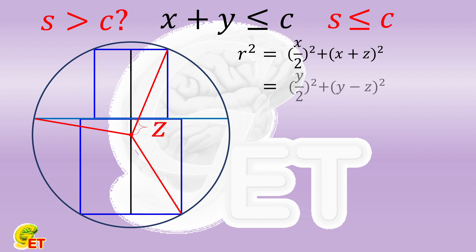In the third triangle, we write it as the square of half s, plus the square of z.